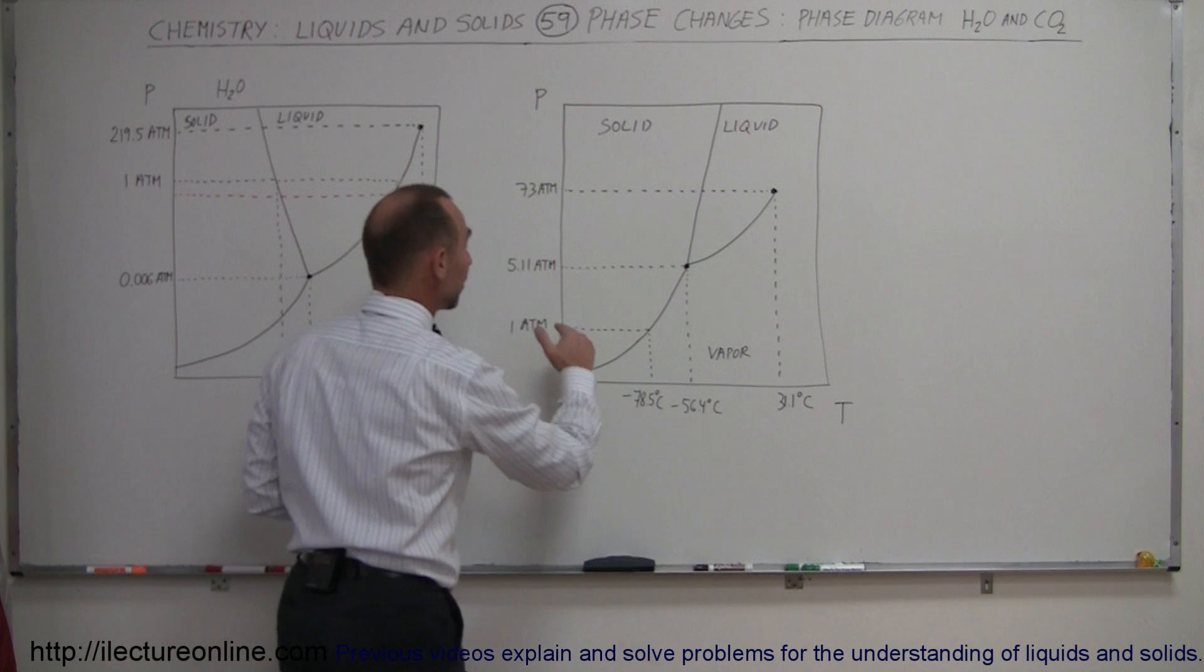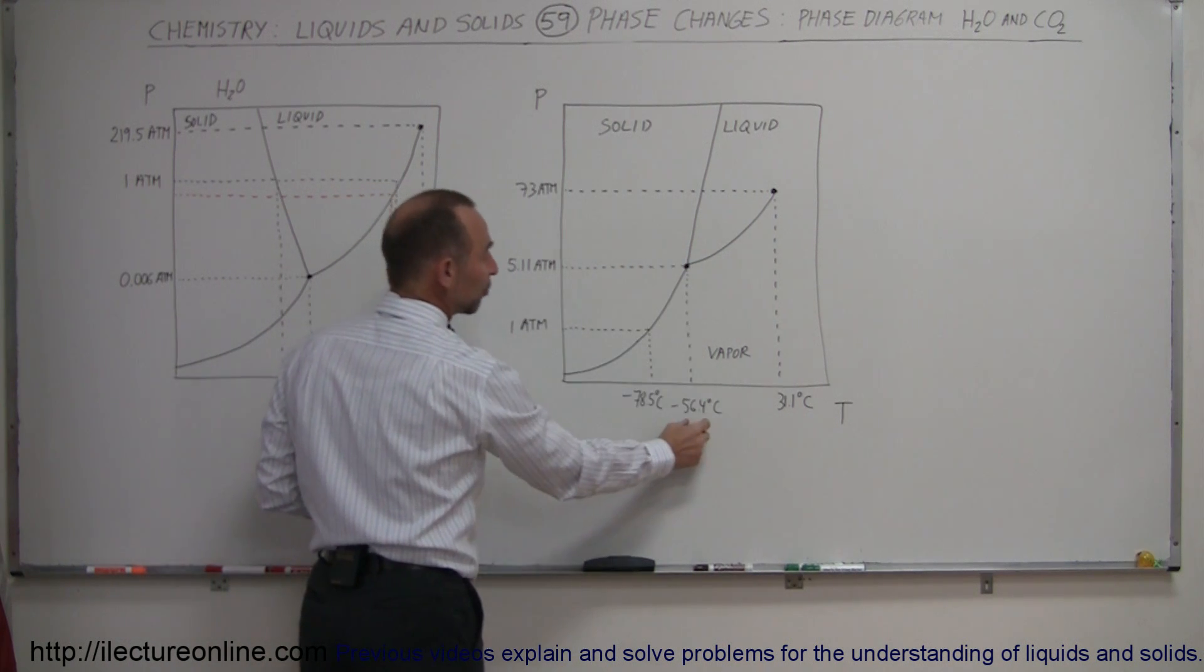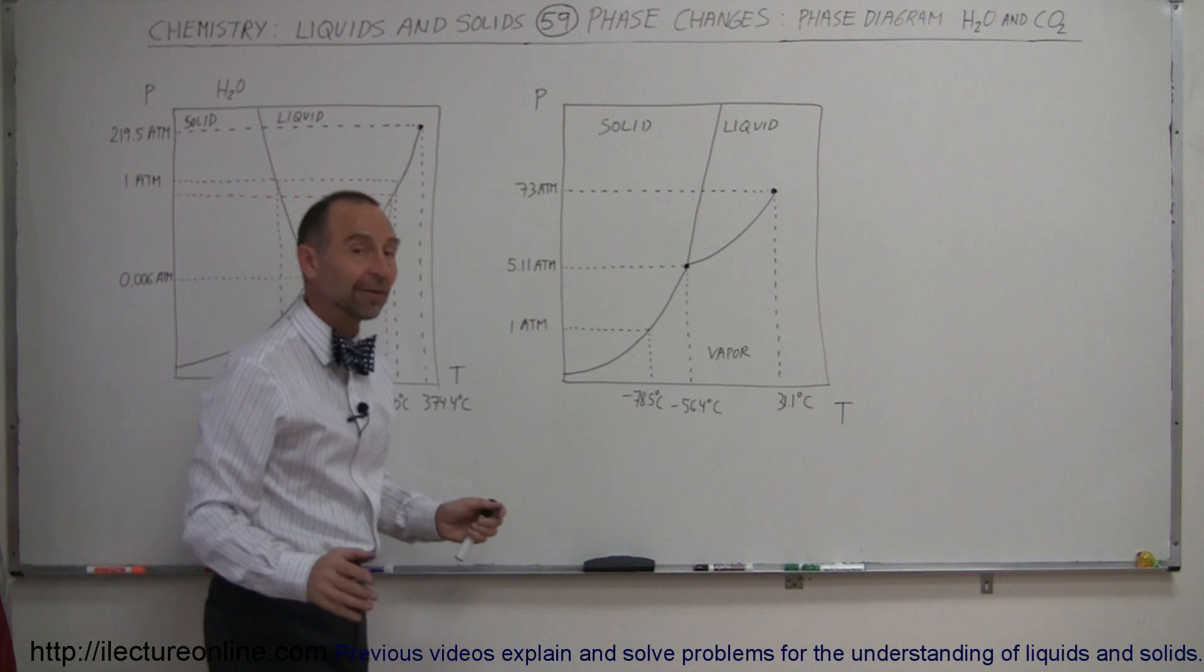For carbon dioxide, you need a pressure of 5.11 atmospheres and at a temperature of minus 56.4 degrees centigrade for that to happen.